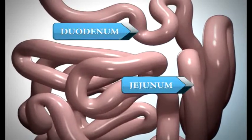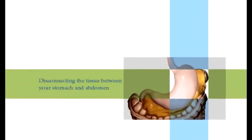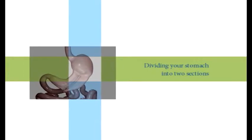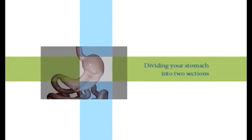There are three main steps in the sleeve gastrectomy. The first step is disconnecting the tissue between your stomach and your abdomen. The second step is dividing your stomach into two sections. The third step is removing the upper rounded left part of your stomach.